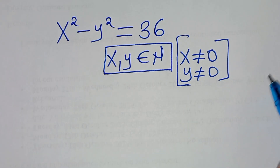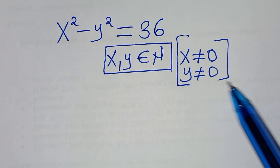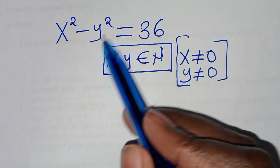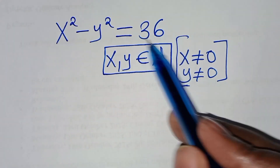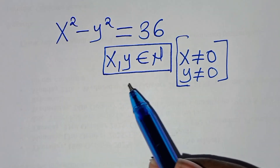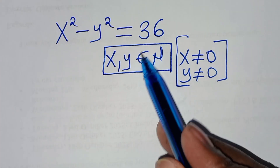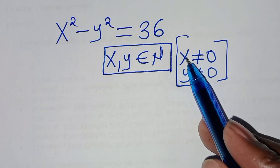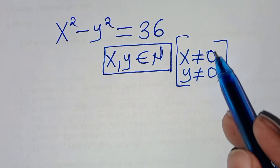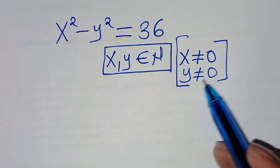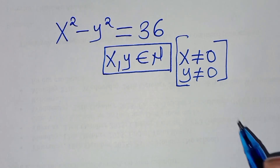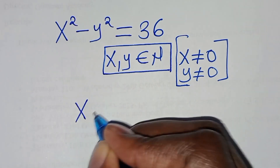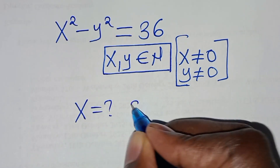Hello everyone, you are welcome to solve this nice algebra problem: x squared minus y squared equals 36, given that x and y are members of natural numbers such that x is not equal to 0 and y is not equal to 0. So what are the values of x and y?